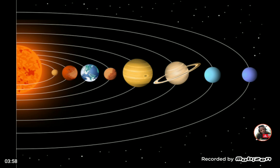Distances within the universe — the only unit humans could come up with to reasonably capture the idea of how vast it is — is to use light years. Now the earth as a planet is located within what is called a galaxy: a massive group or cluster of stars numbering in the billions. The galaxy in which we are located is called the Milky Way.